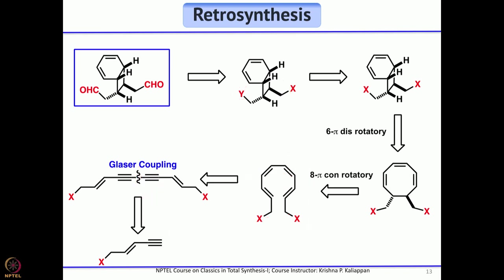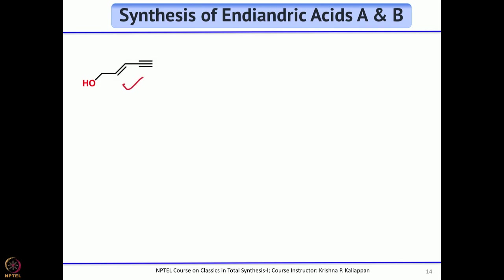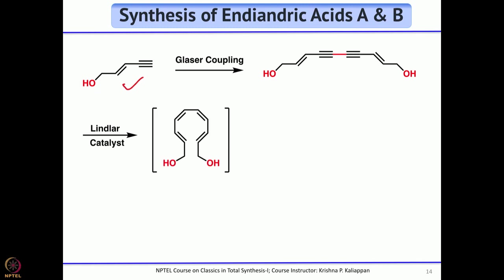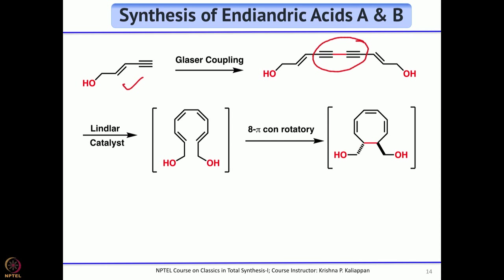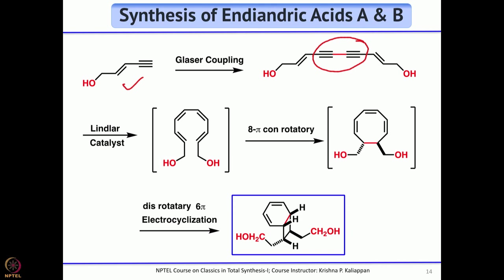The starting material is therefore very simple. Nicholas started with an allylic alcohol bearing a terminal triple bond. Glaser coupling gave the symmetric diyne-diol. Lindlar catalyst treatment was then applied — but it did not stop at the tetraene. The compound underwent first the 8π conrotatory cyclization, then continued directly to 6π disrotatory electrocyclization, giving the key bicyclic intermediate in one step — directly providing the cyclobutane-containing scaffold required for synthesis of all endiandric acids.